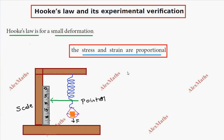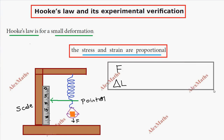So for example, we have different values of force. For each force value, we measure the change in length, which is delta L. Different force values give different elongations. This data forms our reference table.